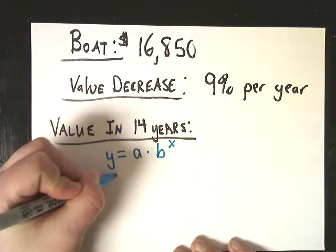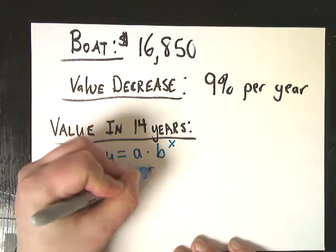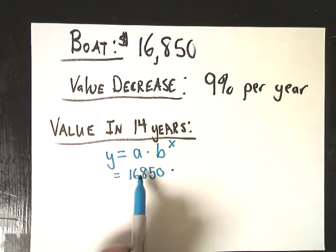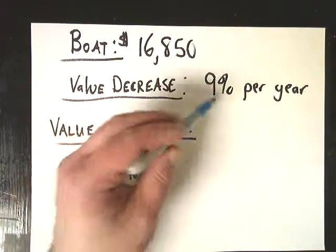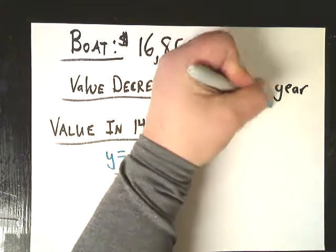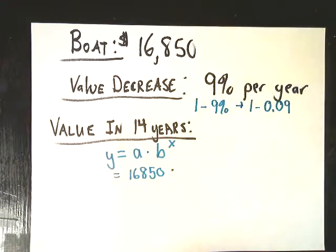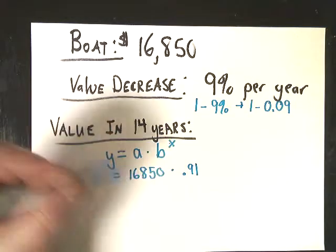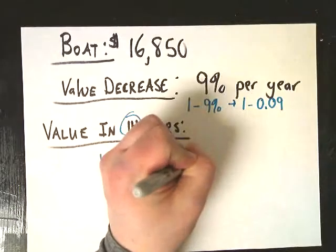My a value is, of course, 16,850. My b value — in order to account for the 9% decrease rather than just being 9% of nothing — I'm going to do 1 minus 9%, or really 1 minus 0.09. Because if you don't adjust — like don't do 1 minus 0.9 — because that would be a 90% decrease, which is not what you want. So 1 minus 0.09 is 0.91, and x is the number of years. They tell me it's 14 years, so I raise it to the 14th power.